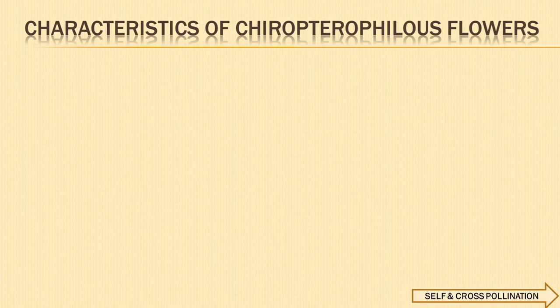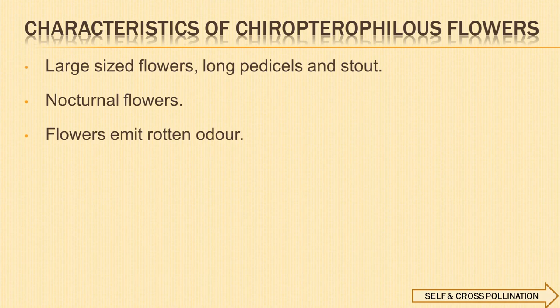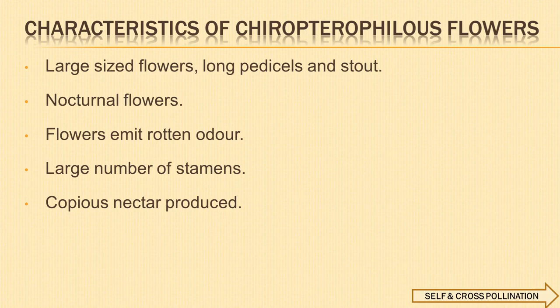Next, we come to chiroptophily. Pollination which takes place with the help of bats is called chiroptophily, and such plants are called chiroptophilous. Characteristics of the flowers are: they are large-sized, having long pedicels and are stout so that bats can hold on to them; flowers open at night and therefore the plants are called nocturnal; flowers emit a rotten odor; flowers have large numbers of stamens to produce more pollen grains; and they produce copious nectar. Anthocephalus and Careya pinnata are examples of such plants.